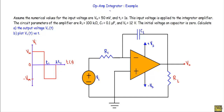In this video I will show you an operational amplifier integrator circuit example. Assume the numerical values: Vm equal to 50 millivolt and t1 equal to one second. The applied input voltage is a rectangular waveform. From zero to t1 (one second), the input goes through the positive half cycle with magnitude equal to 50 millivolt. From t1 to 2t1 (one to two seconds), the input goes through the negative half cycle with magnitude equal to minus 50 millivolt.